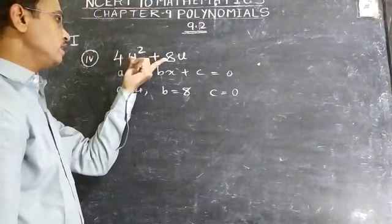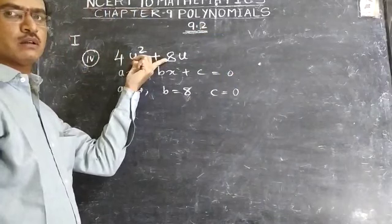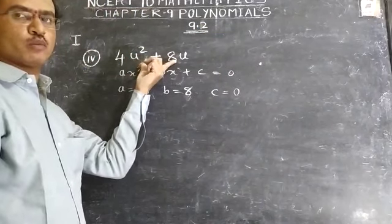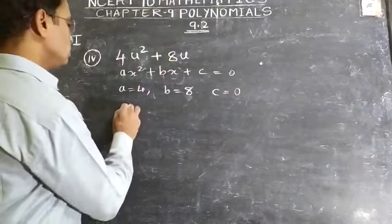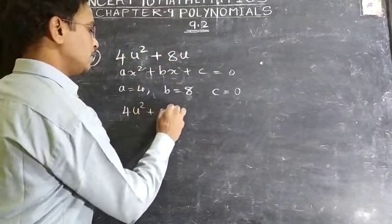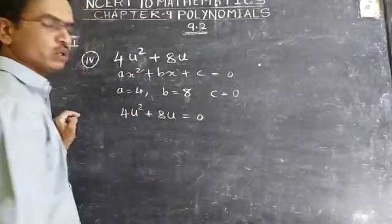Now we should find the factors of this. Find the zeros of this polynomial. I will take this here: 4u² + 8u = 0.